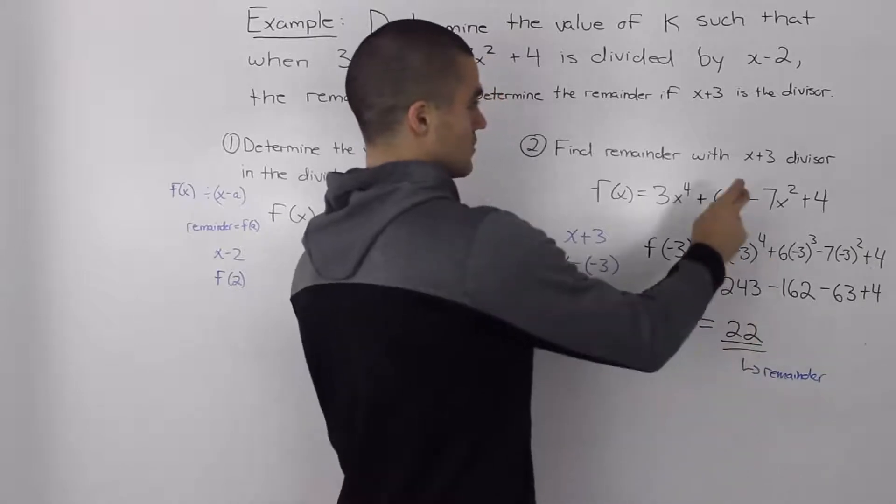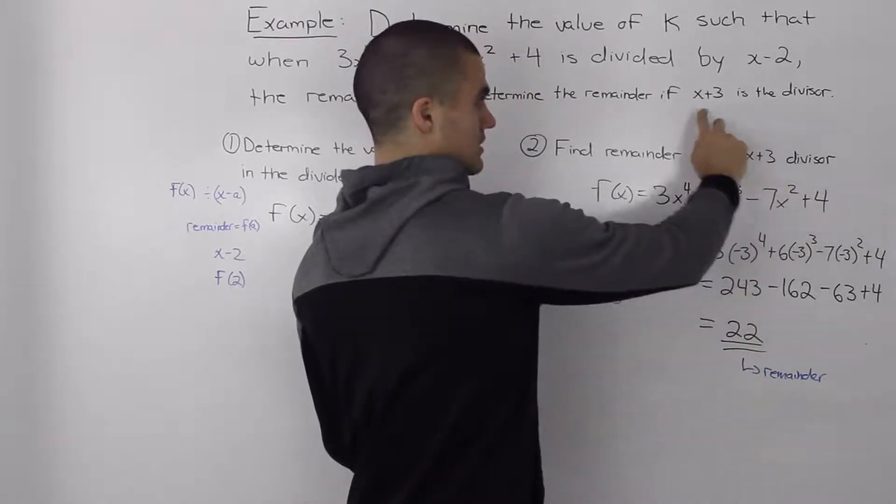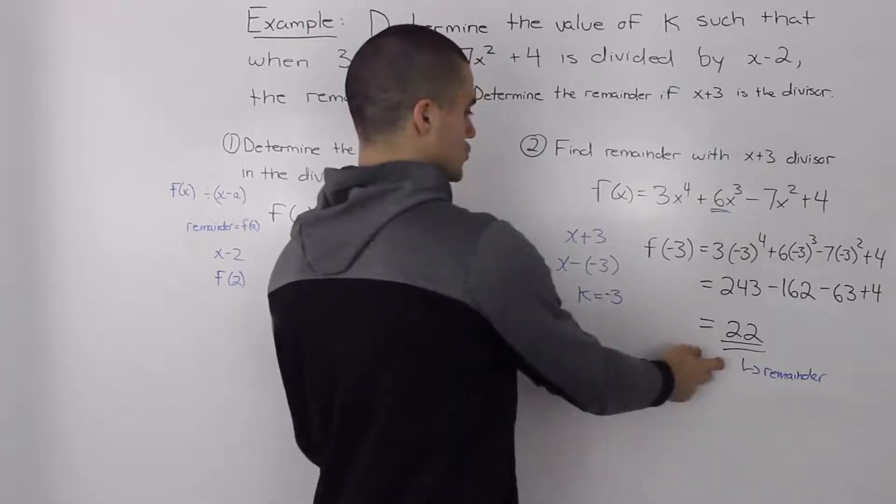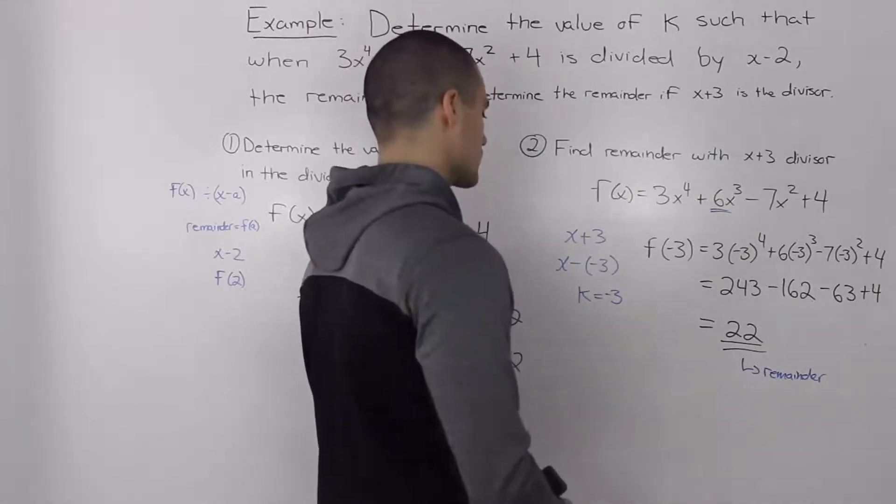So you could even test it. So take this dividend, divide it by x plus 3 using long division or synthetic division, and you should get a remainder of 22.